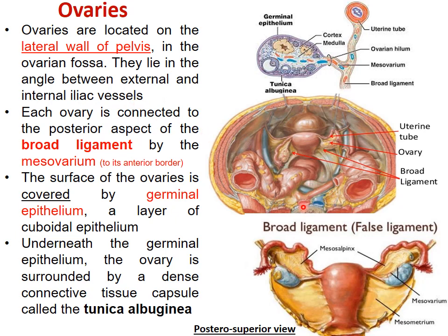The abdominal aorta at the posterior center of the abdomen divides into right and left common iliac arteries. The right common iliac, while crossing the pelvic brim, divides into external iliac and internal iliac. Where this bifurcation takes place, that is the location for the ovaries. The external iliac goes out of the pelvis and, after crossing the inguinal ligament, becomes the femoral artery in the lower limb.